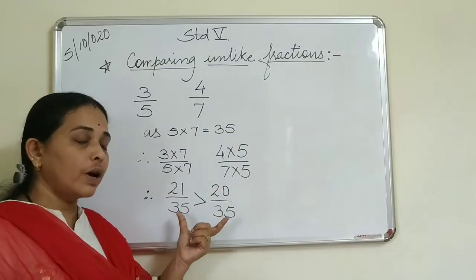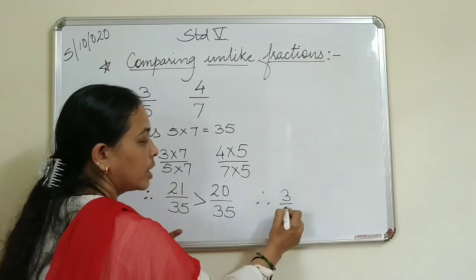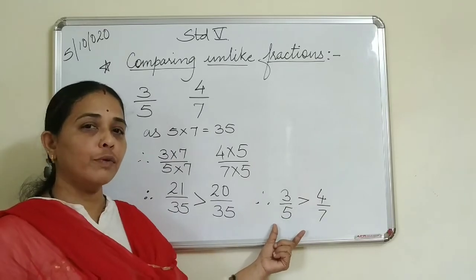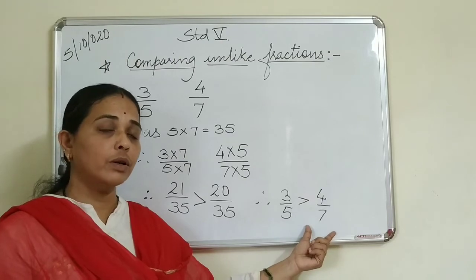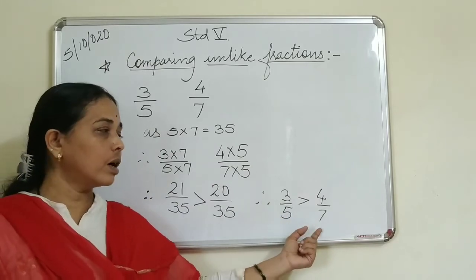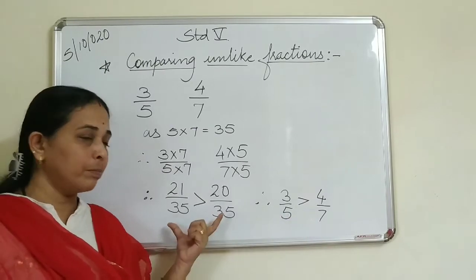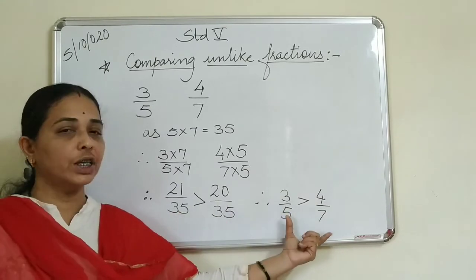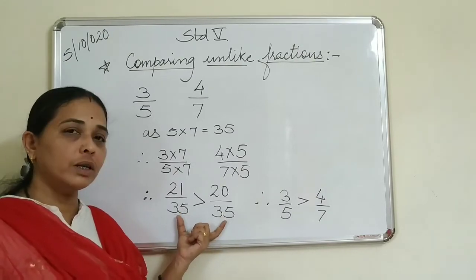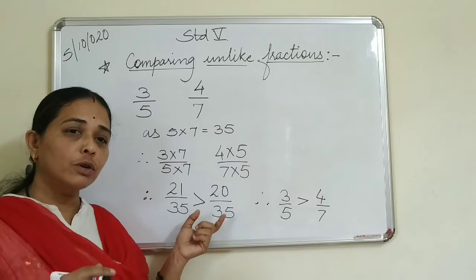Twenty-one upon thirty-five is bigger than twenty upon thirty-five. Therefore, 3 upon 5 is bigger than 4 upon 7. When there is confusion with unlike fractions, you have to make them like fractions and then compare. The value does not change - only the number of parts changes. We have made them like fractions.